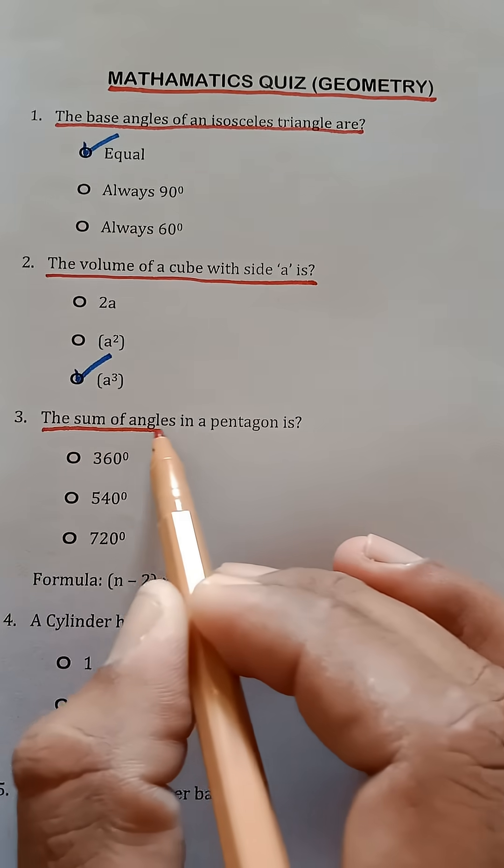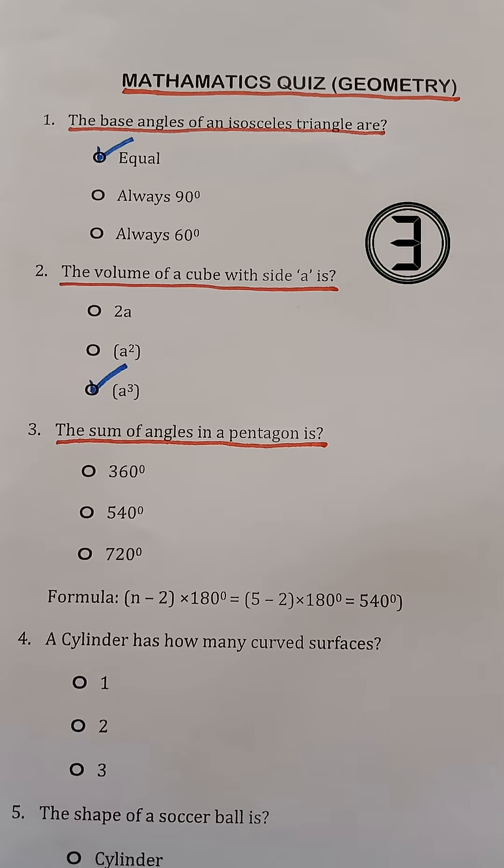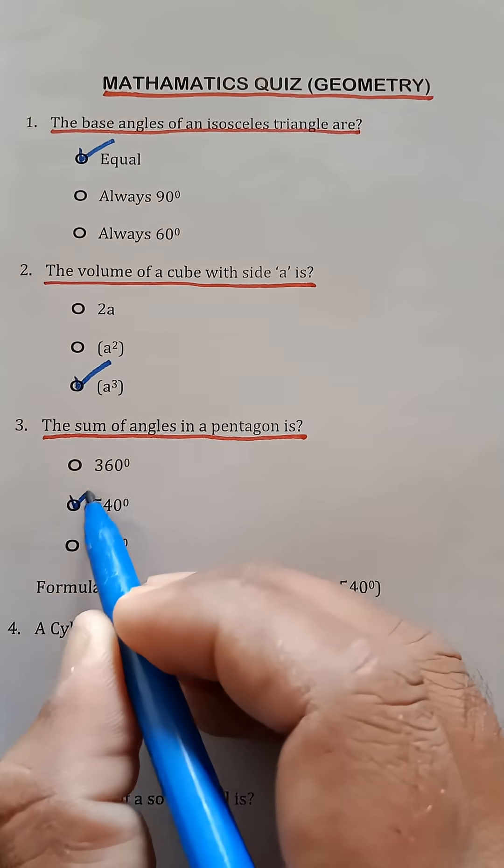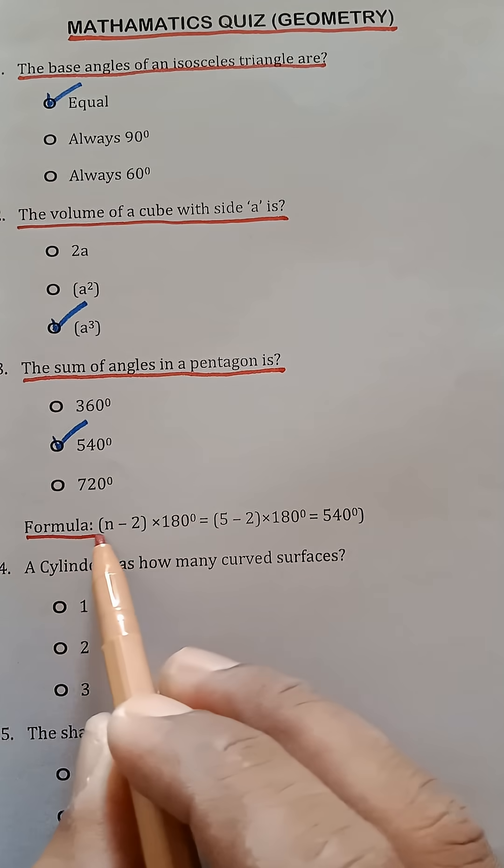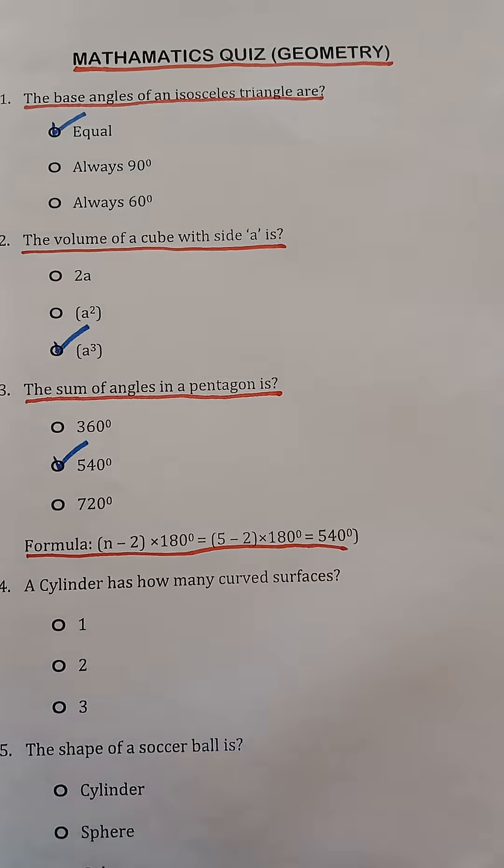Question 3. The sum of angles in a pentagon is? 540 degrees. Formula: (n - 2) × 180° = (5 - 2) × 180° = 540°.